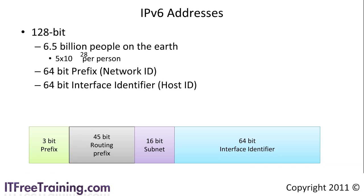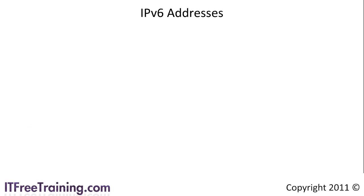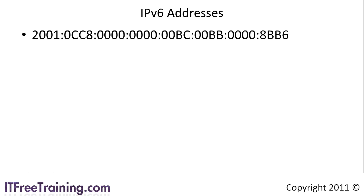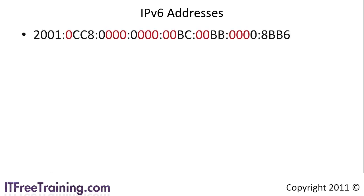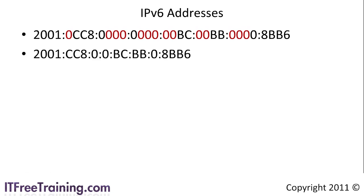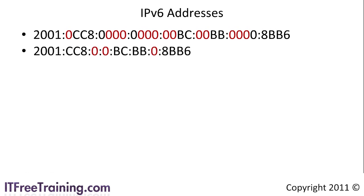Before we look at the different types of IP addresses, it helps to look at how IP version 6 addresses are formatted. IP version 6 addresses are displayed as a group of 8 four-digit hexadecimal numbers. If you have any leading zeros in a group of 4 digits, they can be dropped. For example, all the zeros displayed in red can be removed, giving us the following address. Note that if there are 4 zeros in a group, the address gets reduced to one zero. There must be at least one number in each group of 4.